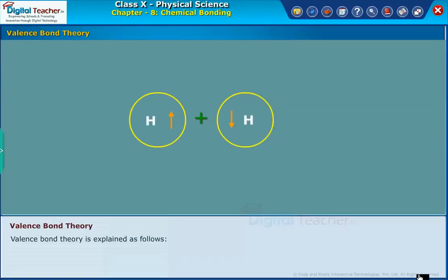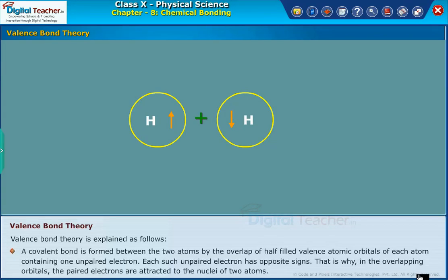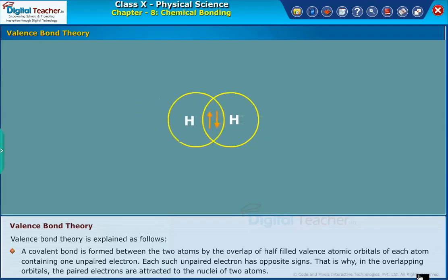Valence bond theory is explained as follows. A covalent bond is formed between two atoms by the overlap of half-filled valence atomic orbitals of each atom containing one unpaired electron. Each such unpaired electron has opposite signs.